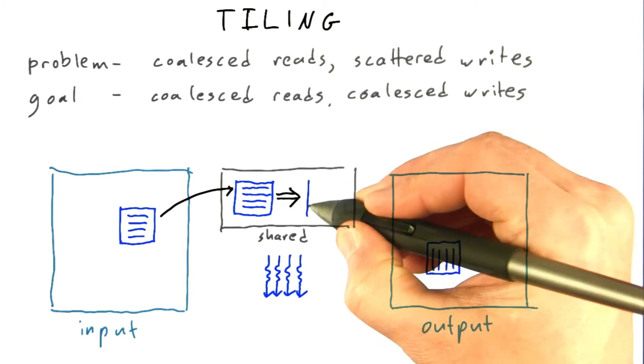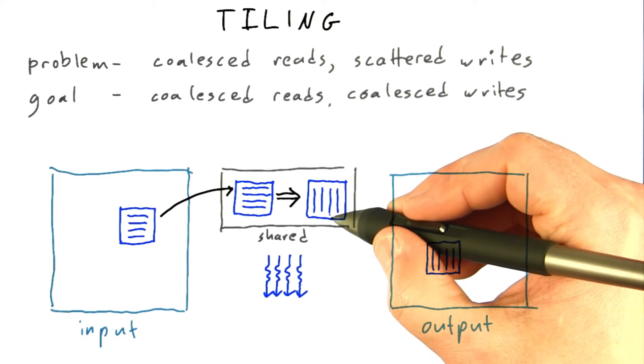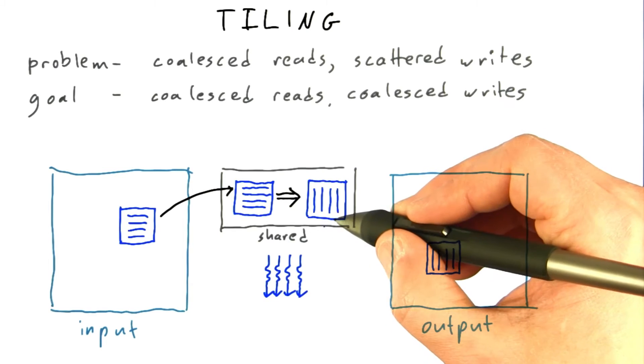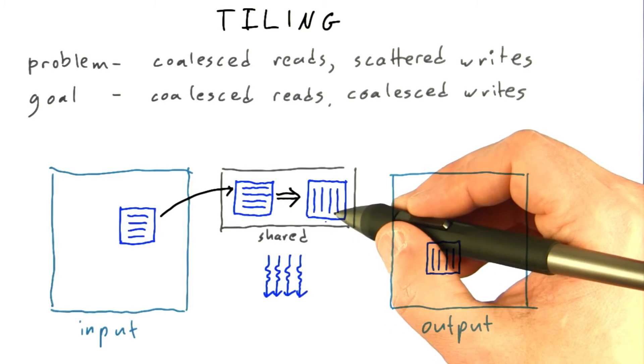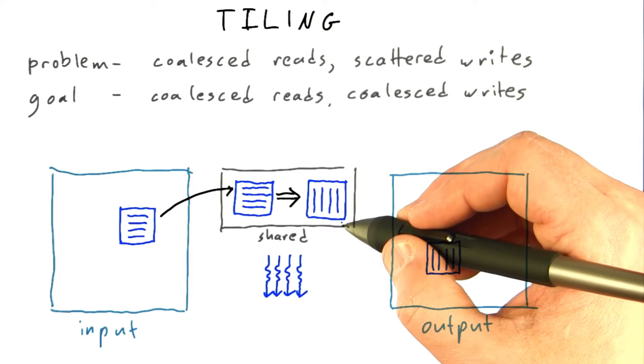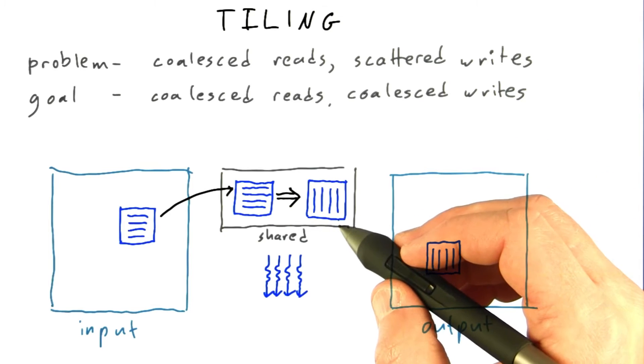They'll perform the transpose. So now the transpose of these elements in this tile is happening in shared memory, where you don't pay that tremendous cost you see in global memory to do a scattered write or read.